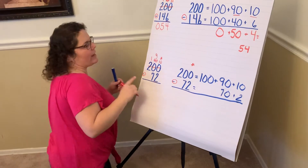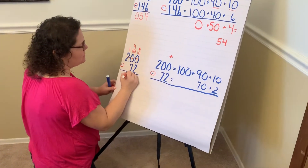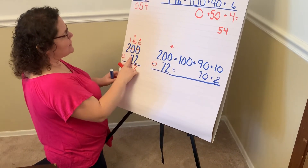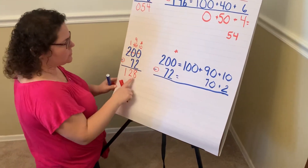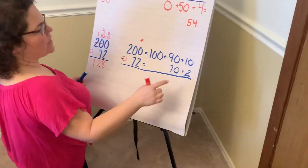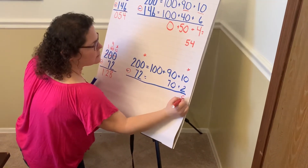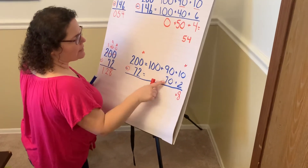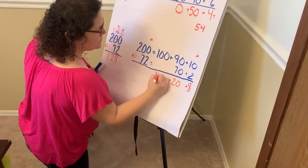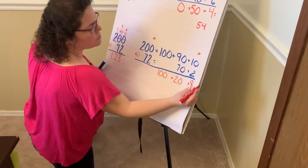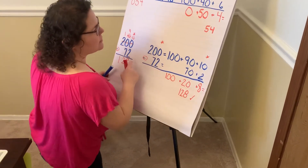So now I can subtract. 10 ones minus 2 ones is 8 ones. 9 tens minus 7 tens is 2 tens. And 100 minus nothing is 100. So I should get that partner of 128. Let's check it over here. 10 ones minus 2 ones is 8. 90 minus 70 is 20. 100 minus nothing is 100. 100 plus 20 plus 8 is equal to, or the same as, 128. My answers check.